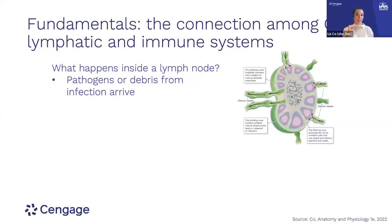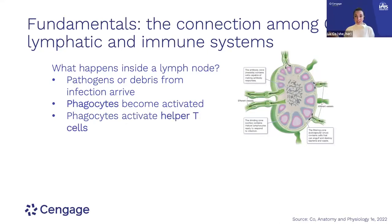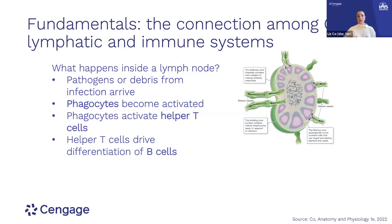I'd brief students: I'm going to tell you a whole bunch of steps and you won't know all of these cell types, but we'll go through them afterwards. Pathogens or debris from an infection somewhere in the tissues will arrive at the lymph node. A certain type of cell called phagocytes becomes activated. These phagocytes will activate another cell type called helper T cells. Helper T cells will help drive the activation and differentiation of B cells, resulting in antibodies.